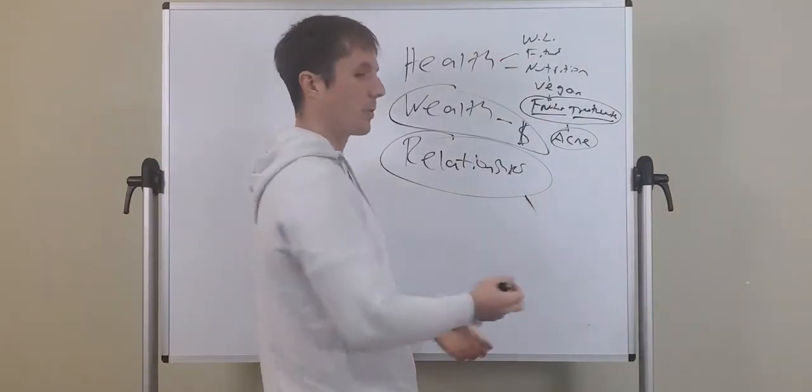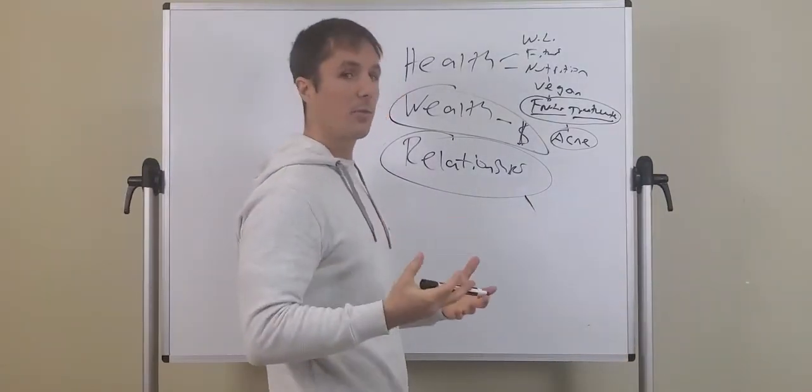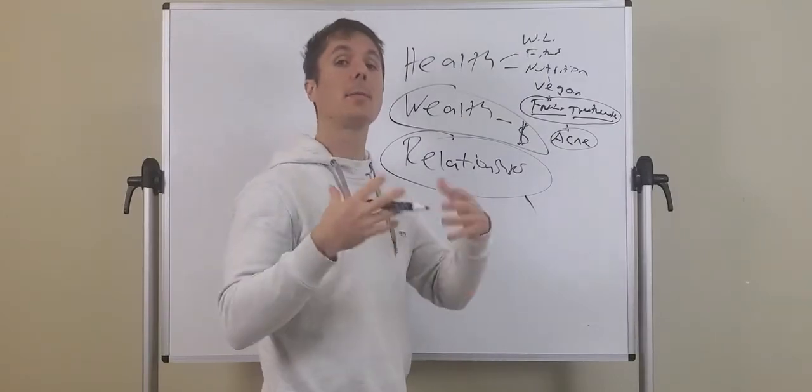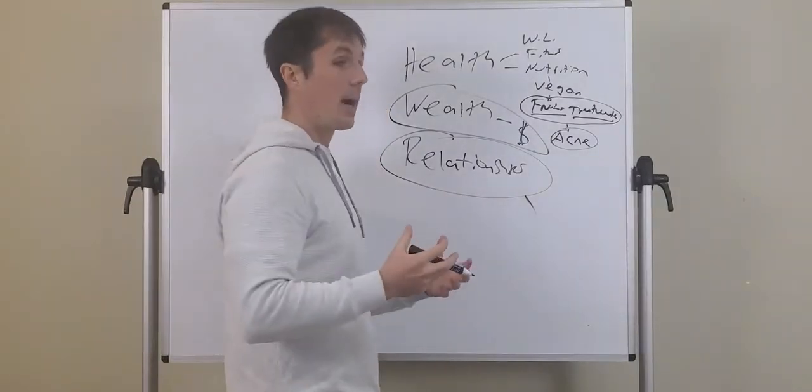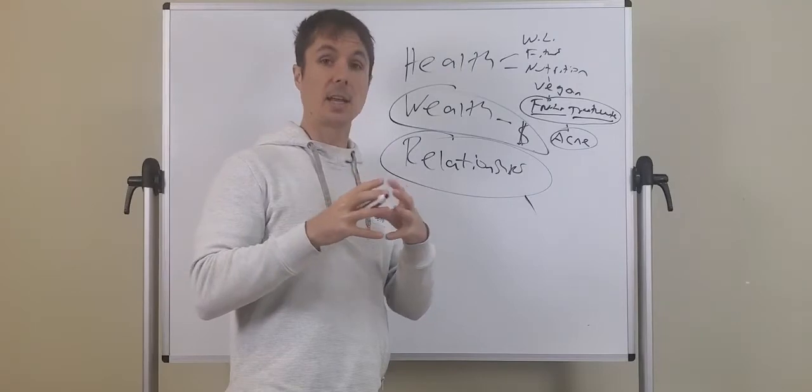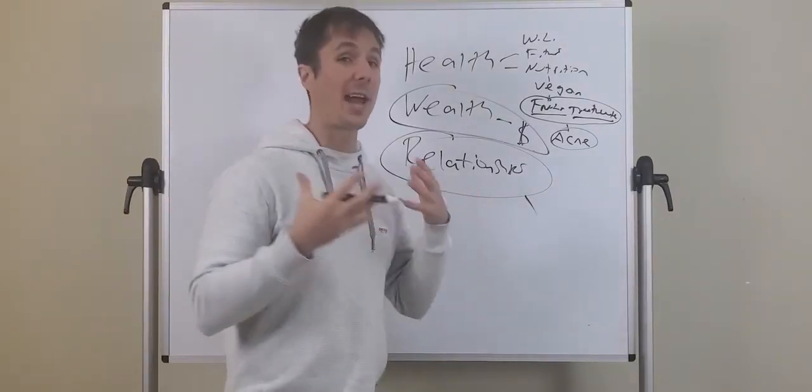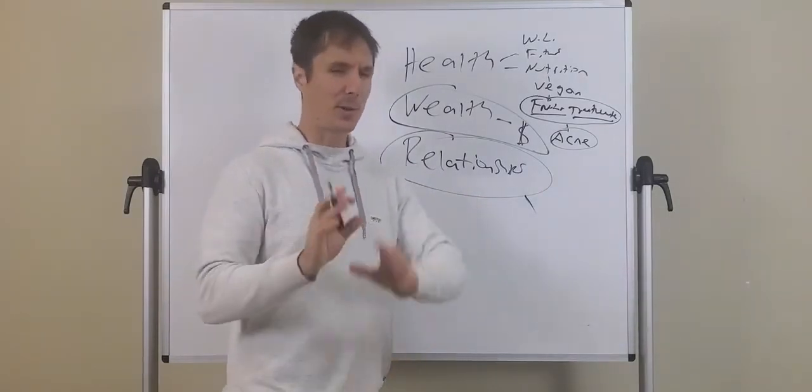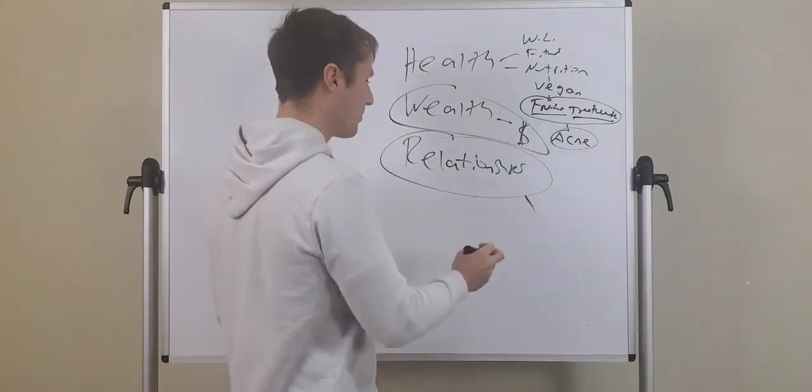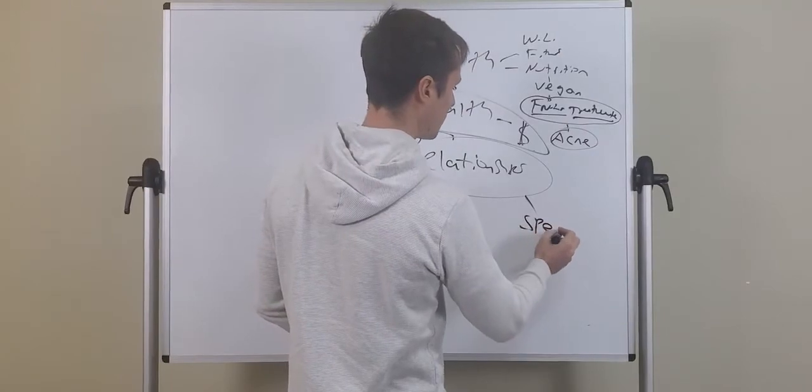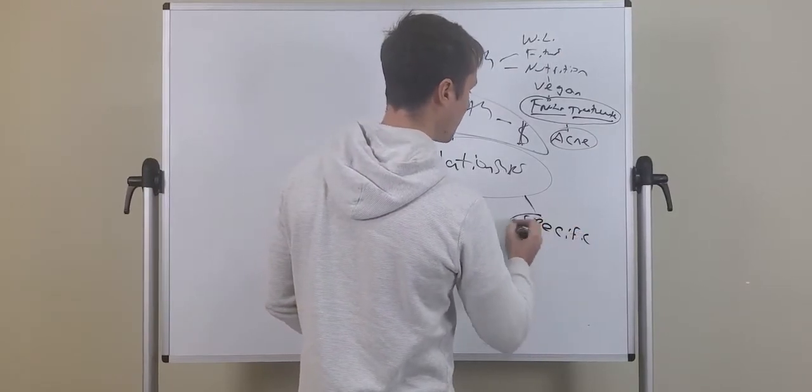So if you just say, oh, I help people with relationships, it's much more powerful to say, like, I help people with polyamorous relationships, or I help marriages stick together for life, or I help you get your ex-girlfriend back, your ex-boyfriend back, as weird as that may sound. But it's important to be very, very specific.